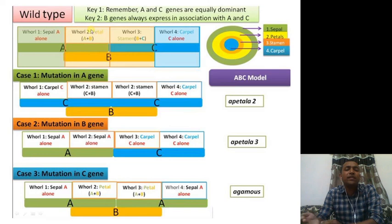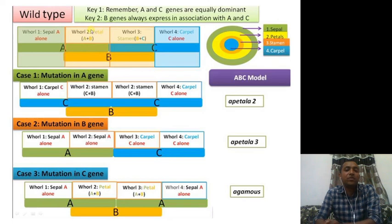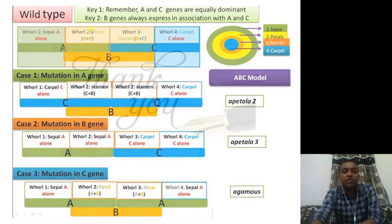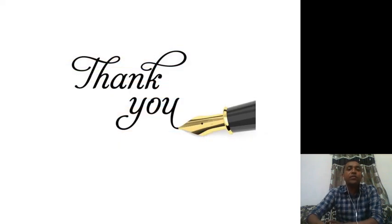This was, in brief, about mutation and the expression of different genes in the case of floral development. This was all about the ABC model of floral development. Thank you and have a nice time.